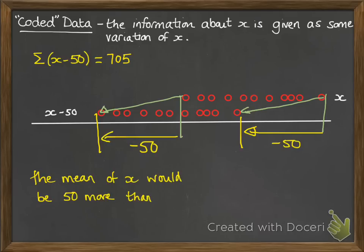So the mean of x is going to be 50 more than the mean of x minus 50. So we can calculate the mean from the information they give us, but then we know the mean of our original data would actually be 50 further up the scale, and we'd have to adjust it to compensate for that.